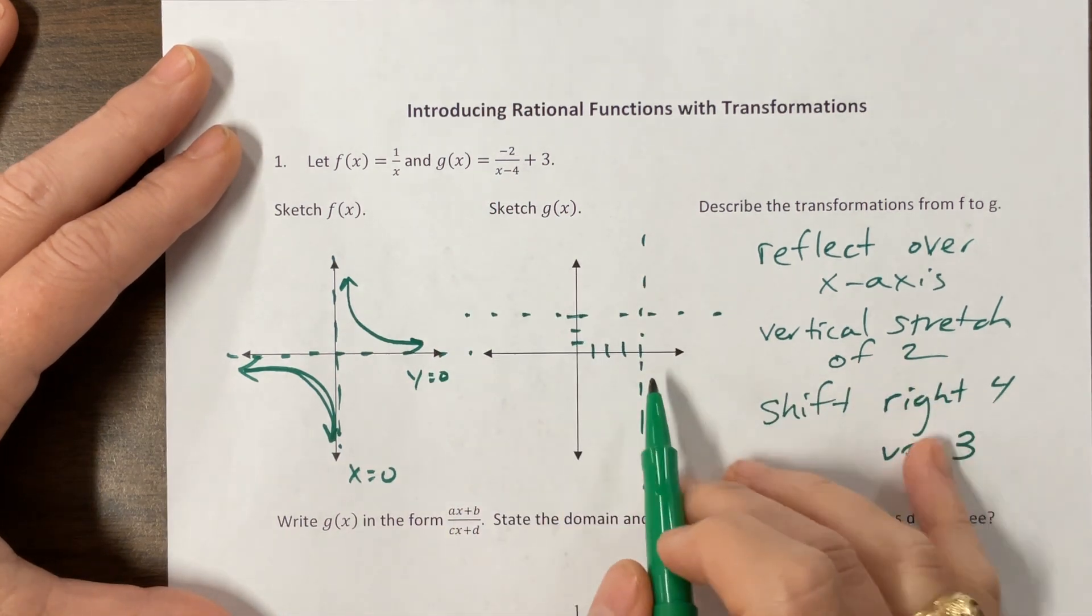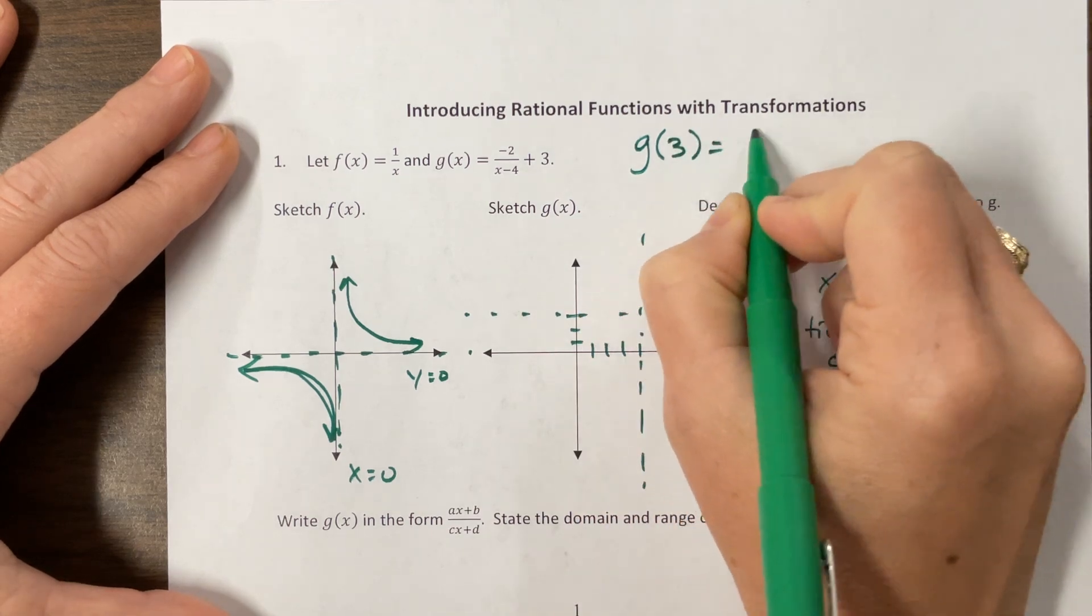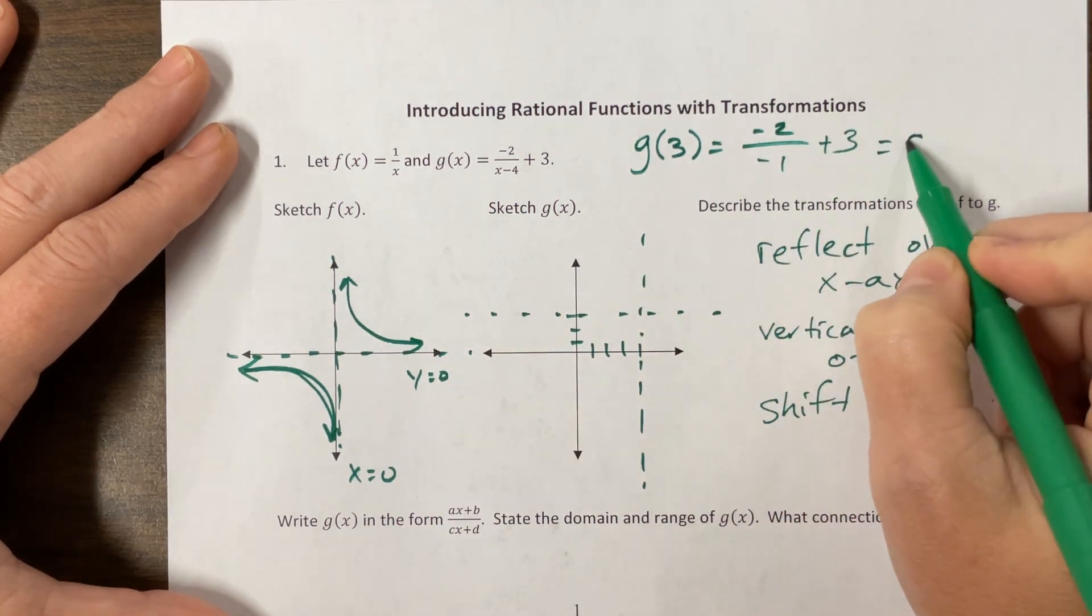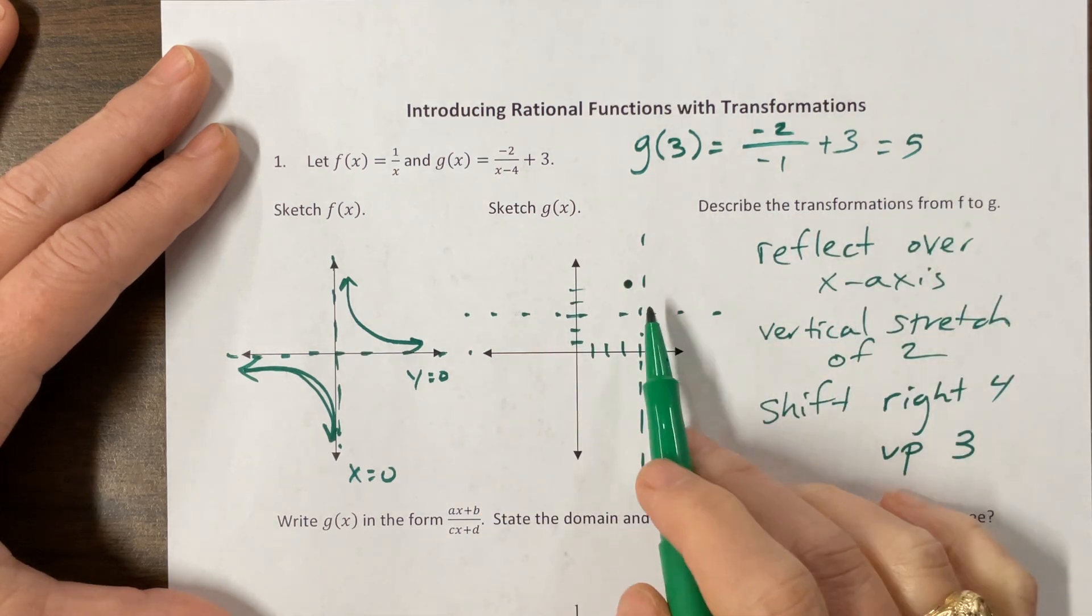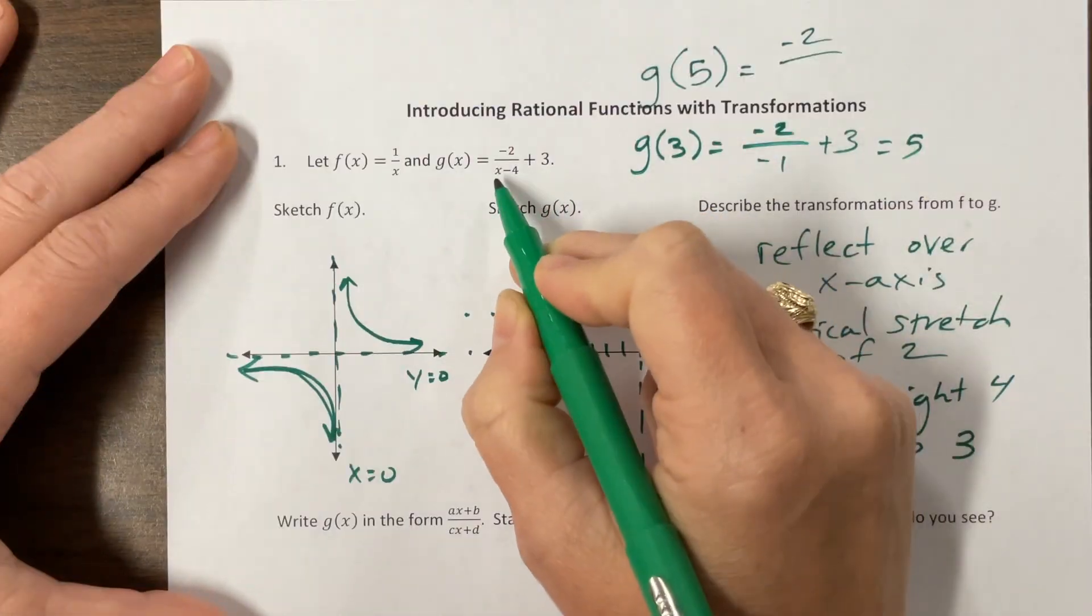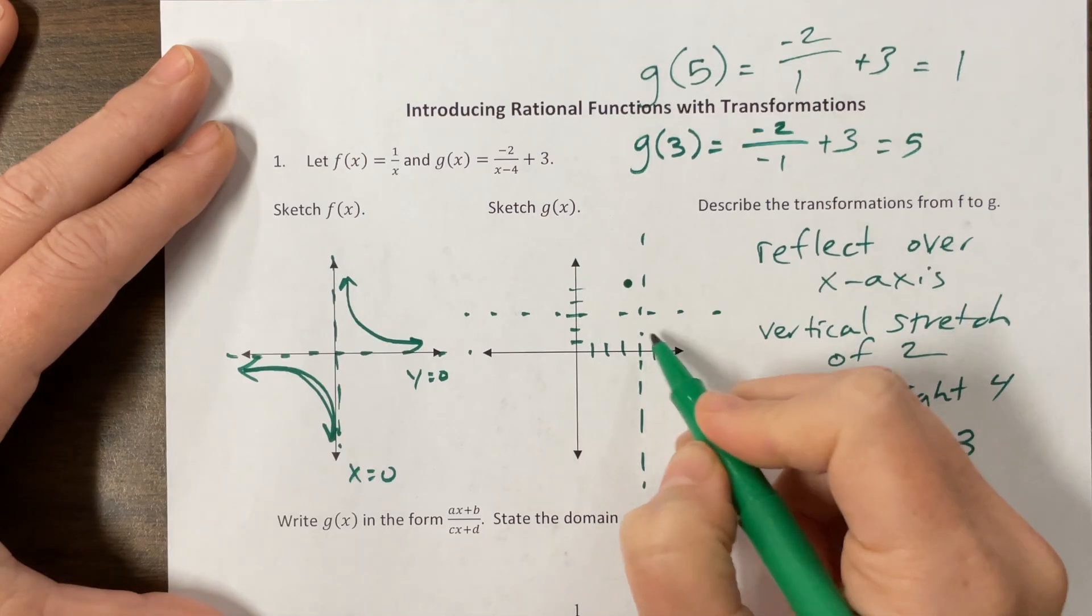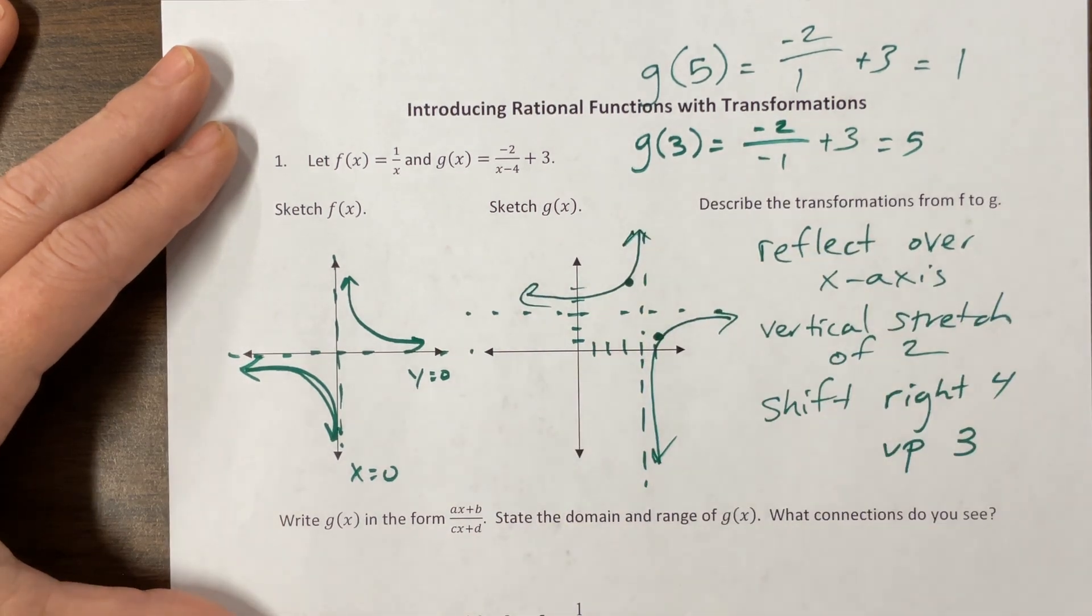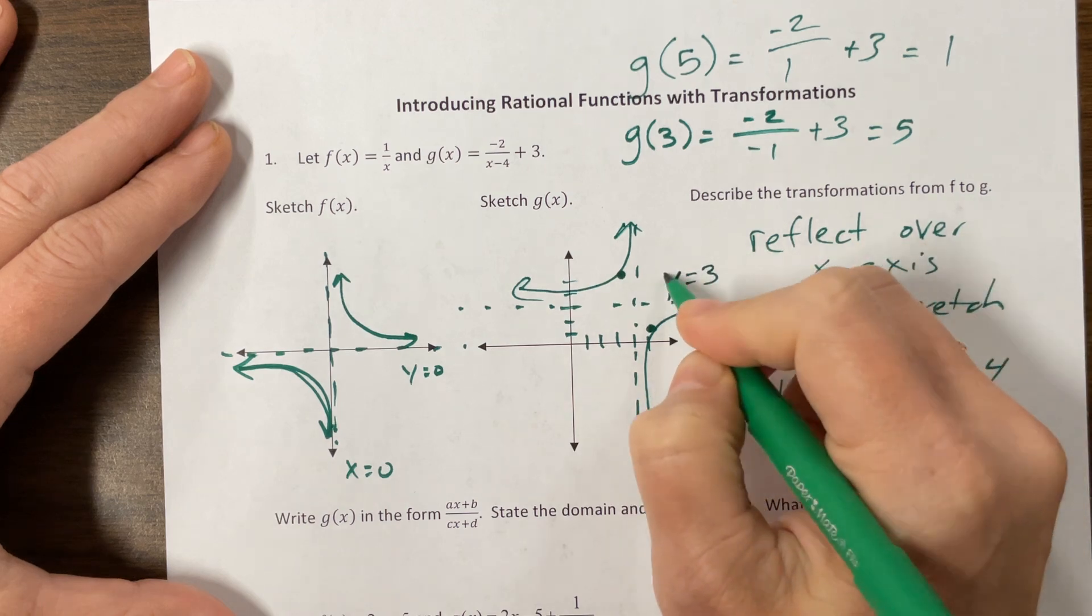And so now what I might do is I might plug in and see what happens if I'm one unit away. If I do G of 3 would be negative 2 over 3 minus 4 plus 3 which equals 5. So here at 3 I'm at 1 2 3 4 5. I could also go 1 on the other side of the asymptote. G of 5 would be equal to negative 2 over 5 minus 4 which gives me negative 2 plus 3 gives me a positive 1. So here at 5 I'm at positive 1. So my graph has been stretched a little bit. What I know is that I have an asymptote at x equals 4 and an asymptote at y equals 3 and we're doing something like that.